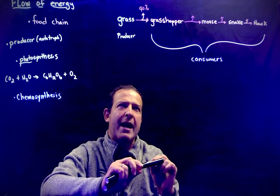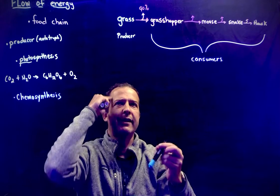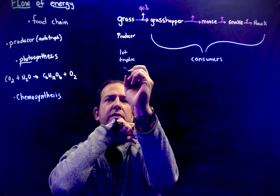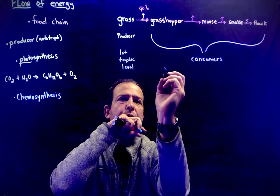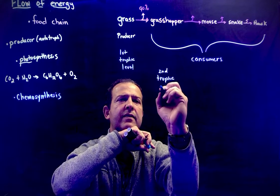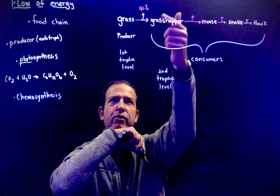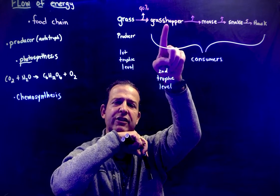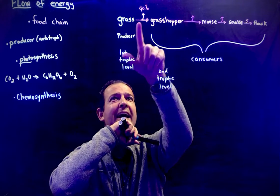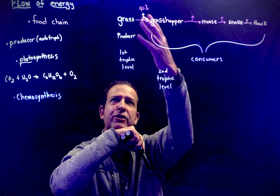The grasshopper only gets about 10% of the energy. We say that the grass is at the first trophic level, and the grasshopper would be the second. Trophic refers to energy, so first energy level, second energy level. Does the second energy level have as much energy as the first? Well, 90% was lost, so the second trophic level only has 10% of the original energy we started with.